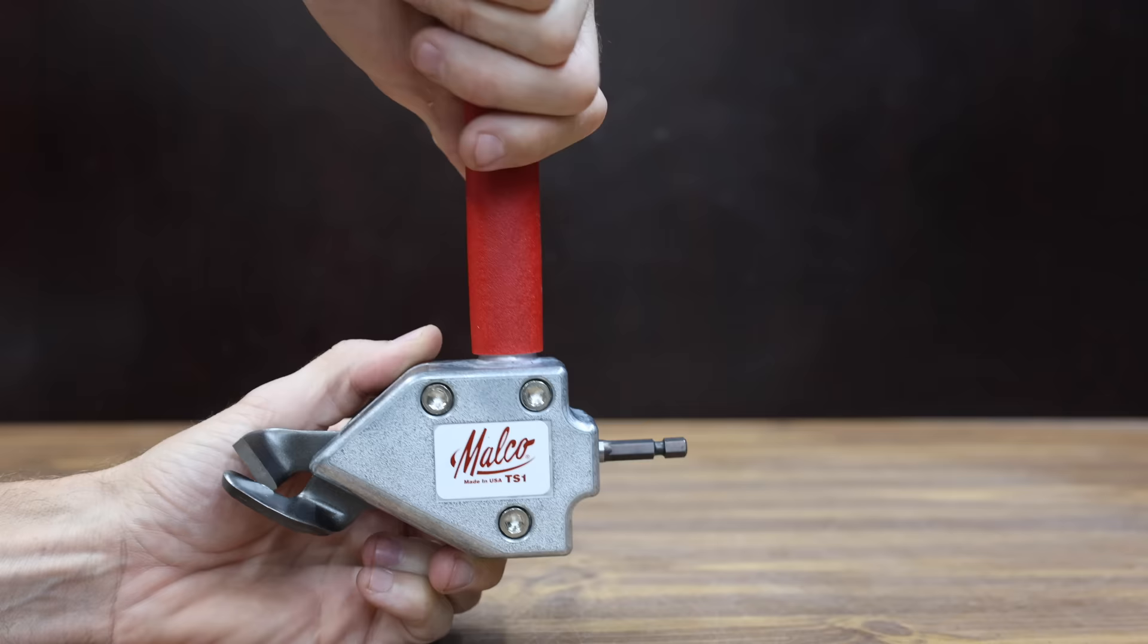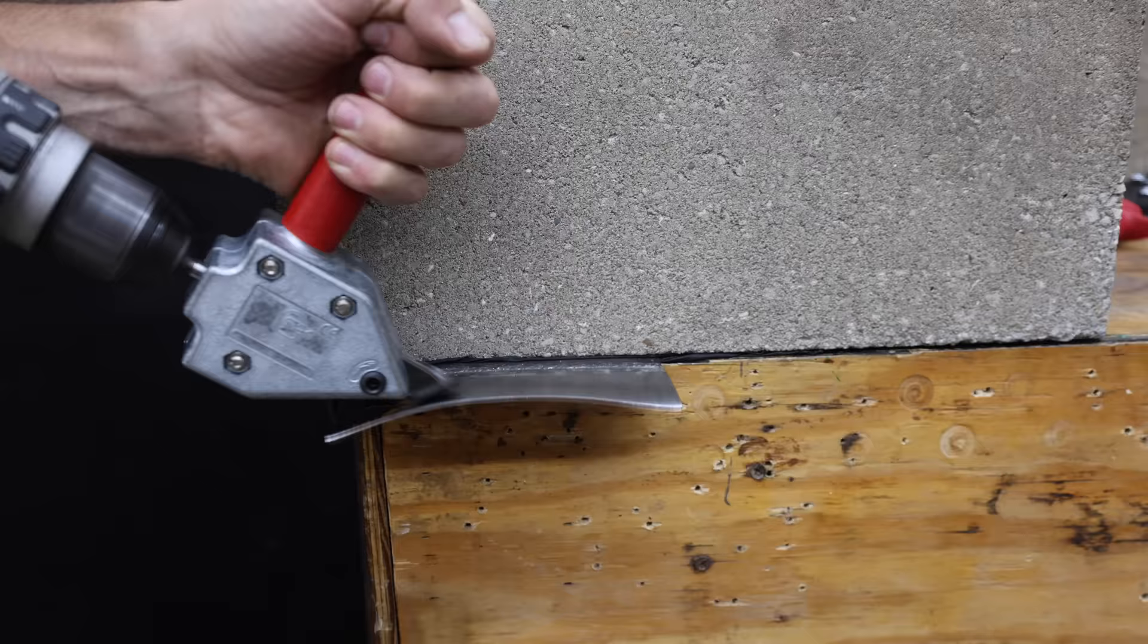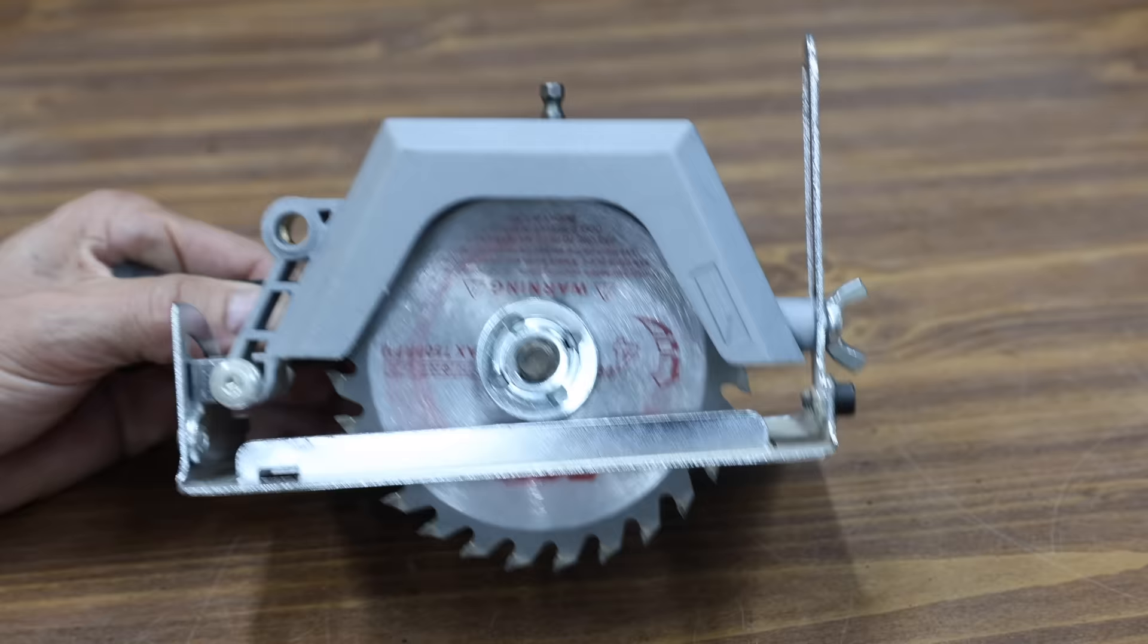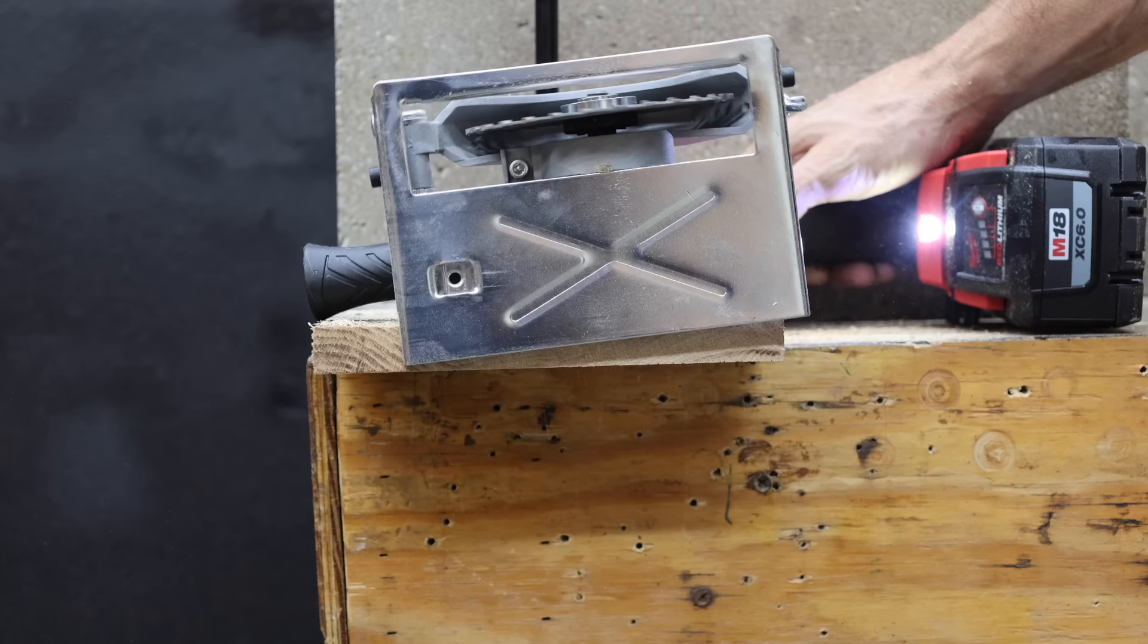Not all drill attachments are junk. This Malco metal cutting shear did an amazing job cutting through sheet metal. The Malco shears made very easy work of cutting through aluminum flashing. It also did a great job cutting through 20 gauge steel. On the other hand, the circular saw attachment is more likely to cause an injury than it is to make a quality cut. Definitely one of the worst products I've ever tested.